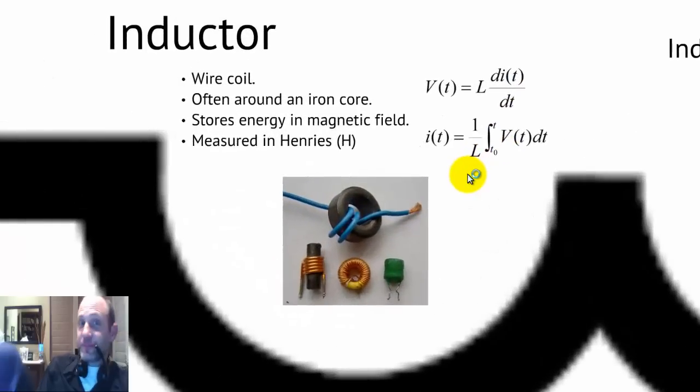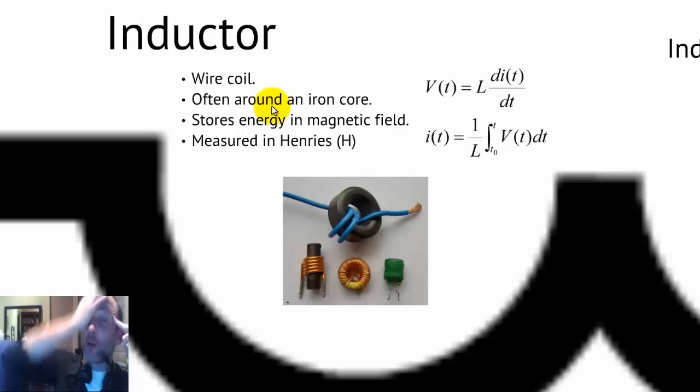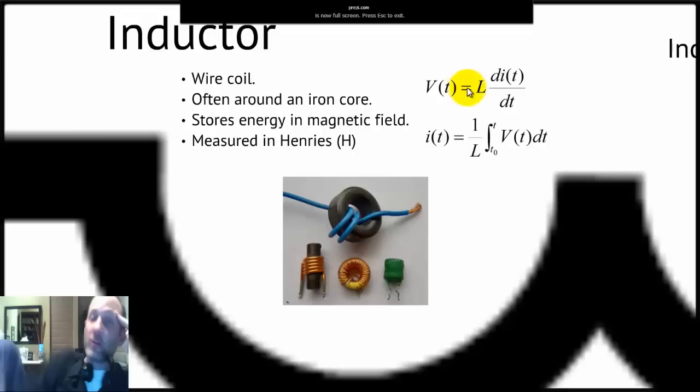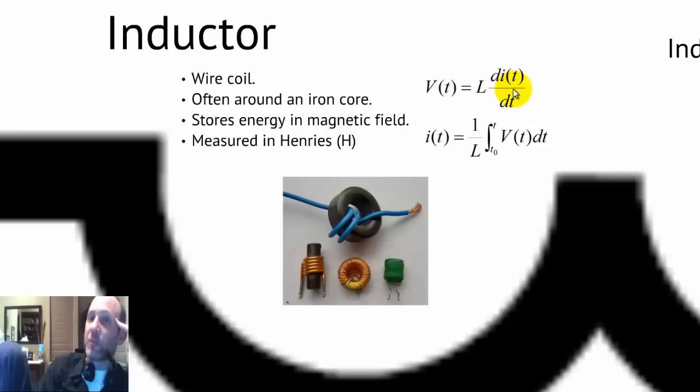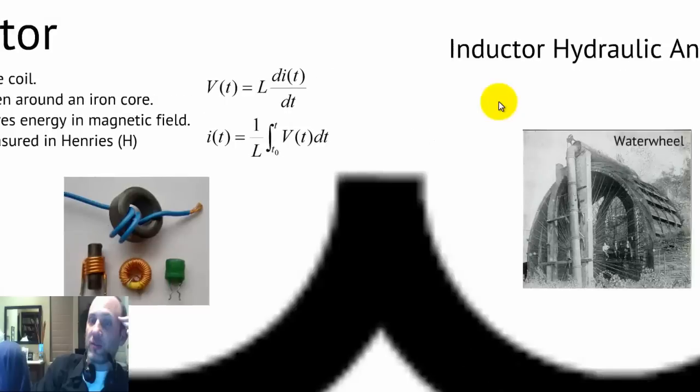Inductors. I've never really used these that much. They're kind of like the anti-capacitor. If you can understand capacitors, it's kind of good to go through these. These are basically a wired coil, often around an iron core. Instead of storing energy in an electric field, it stores it in a magnetic field. These are measured in Henry's. As you can see, the equation is just the flip side of what a capacitor is. Here, the voltage is proportional to the change in current with respect to the change in time across the inductor. And that proportionality constant is, we call that L.